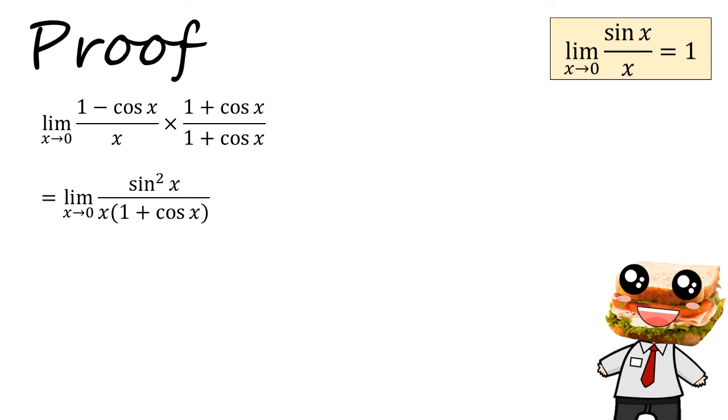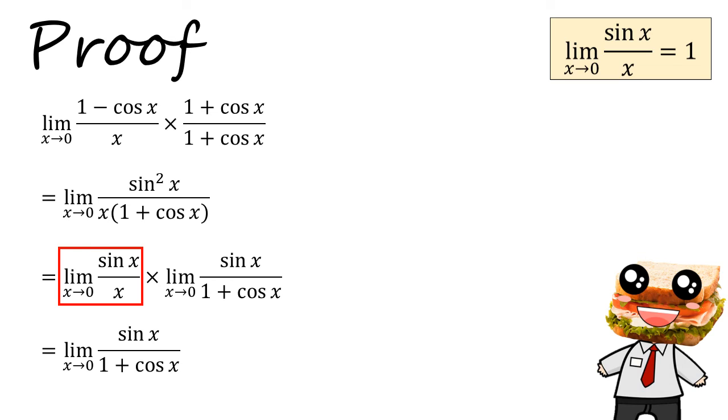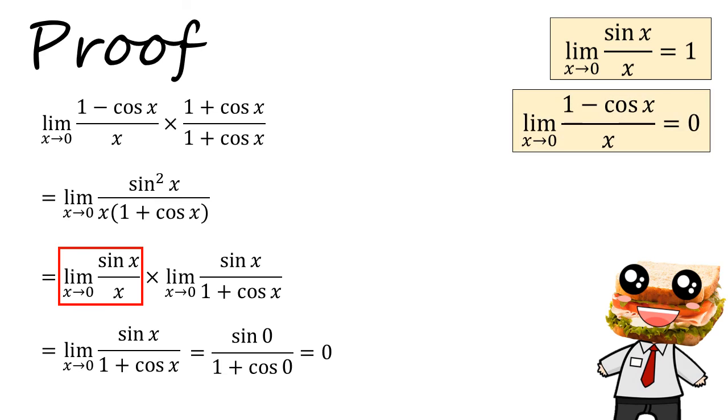Next, we can split this into the product of two limits. And in the first limit, you can see that this is the result that we got before. Sine x over x tends to 1 as x tends to 0. So we only need to consider the second limit. And this is a simple limit because this will just give us sine 0 over 1 plus cosine 0, which is just 0 in the numerator divided by 2 in the denominator, which is just 0. So this is our second result.